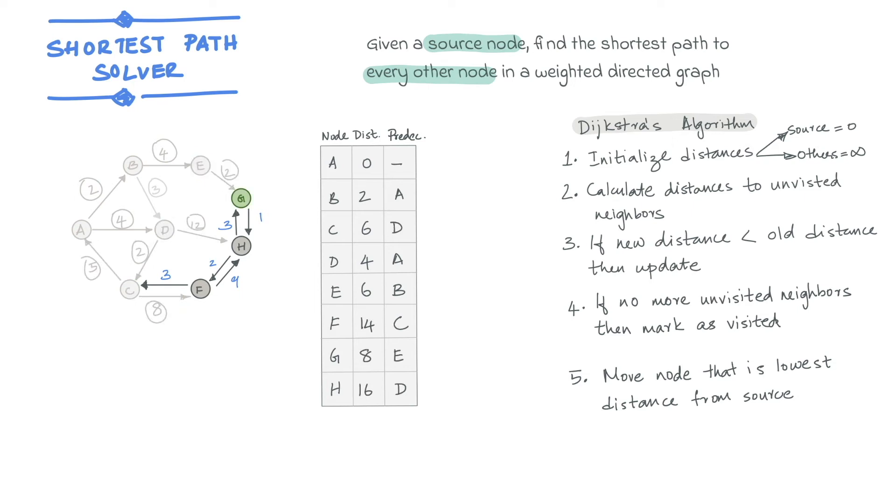Now in the case of G, we'll see how a previous distance that is not infinity gets updated. So in this case, the distance to get to G from source is 8. The distance to get to H from G is 1. So the total distance from source to H via G is 8 plus 1, 9.